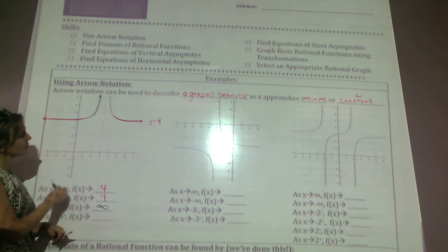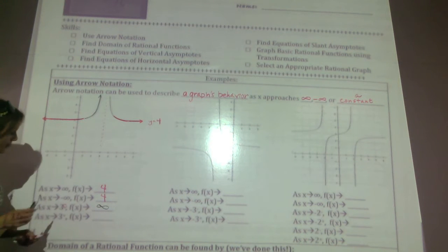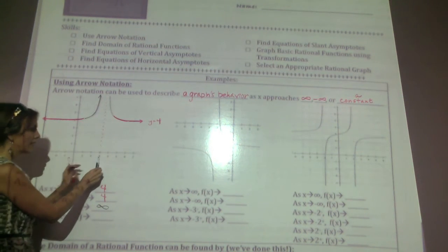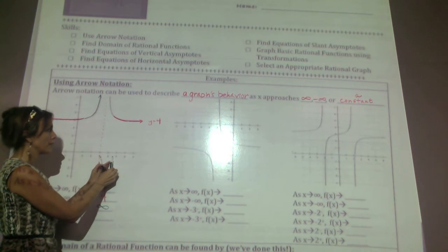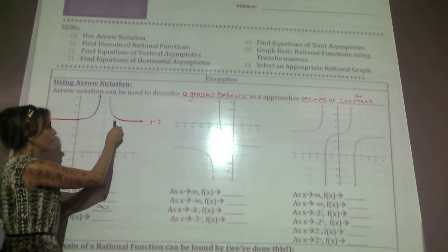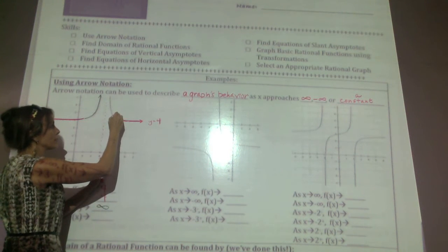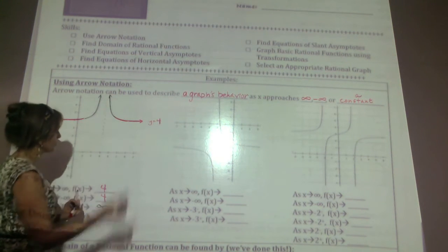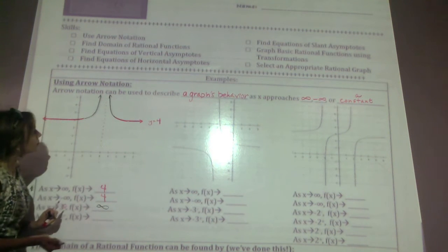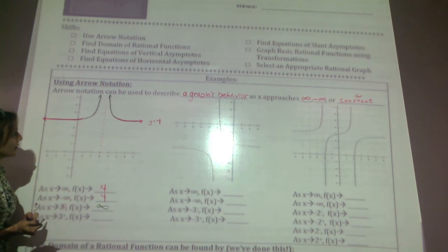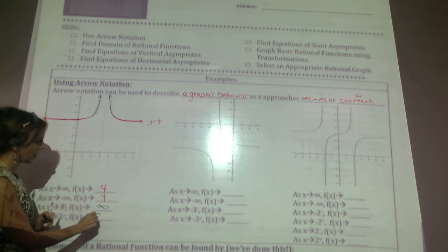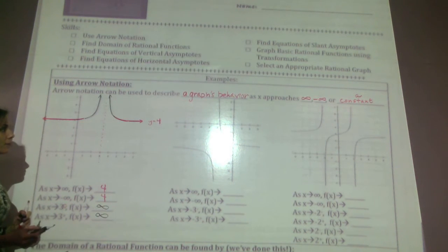Now let's come to the other side: as x approaches 3 from the right. I move to the right of x equals 3, find the graph, and trace it towards the value of 3. It looks like we're going up, or towards positive infinity.